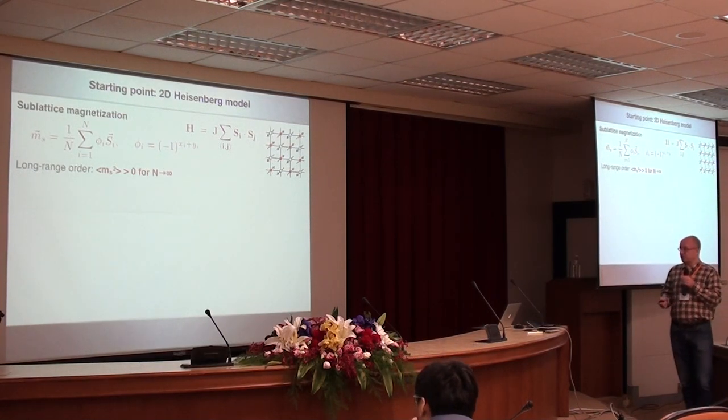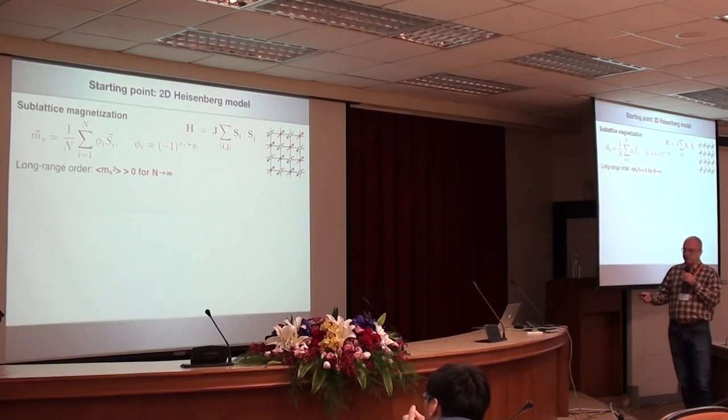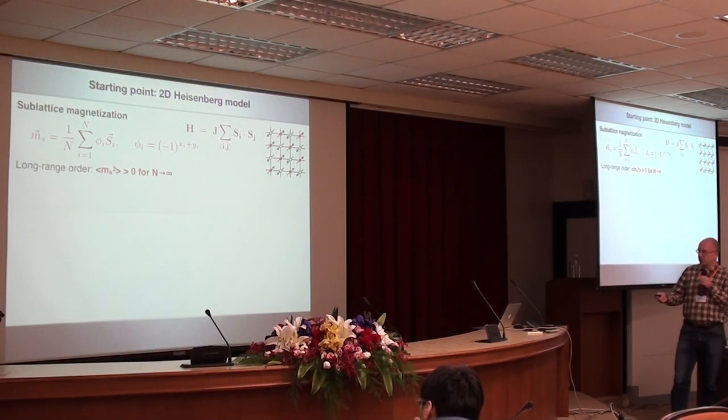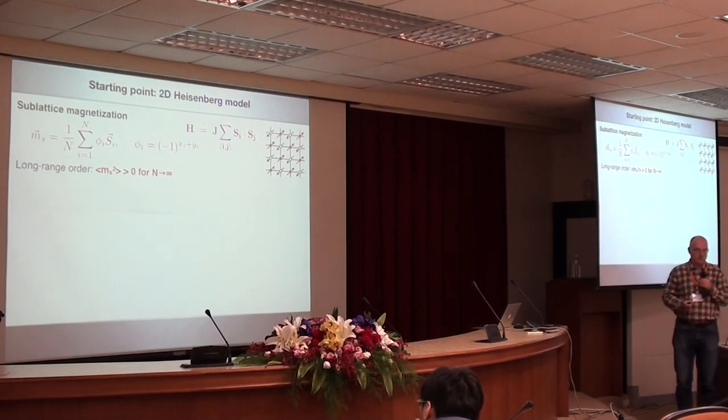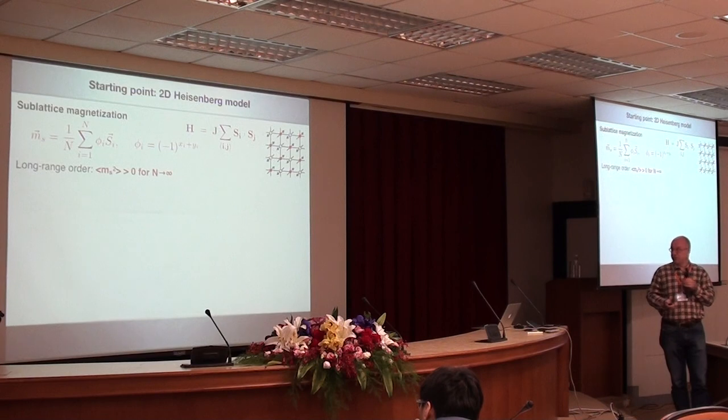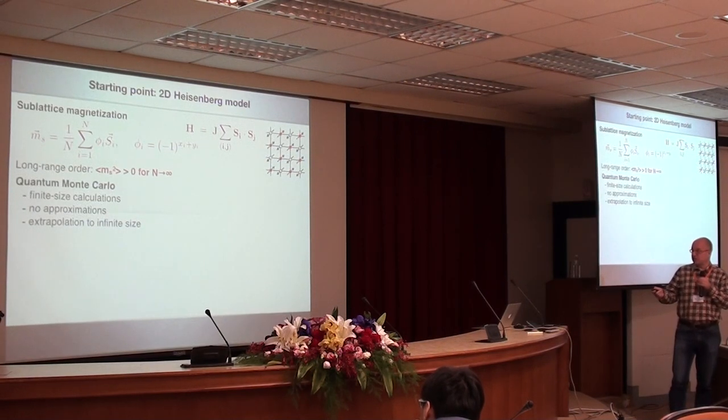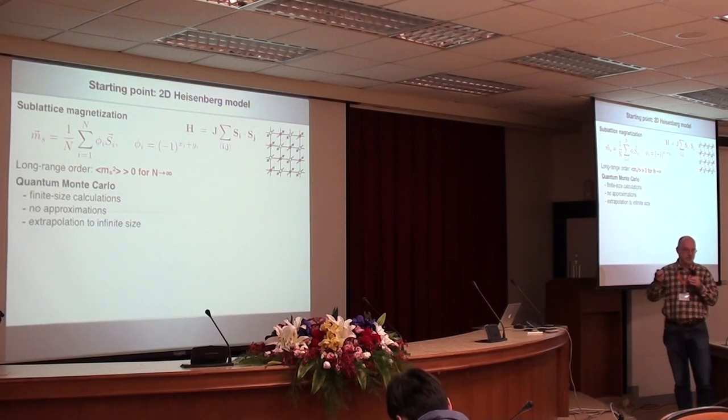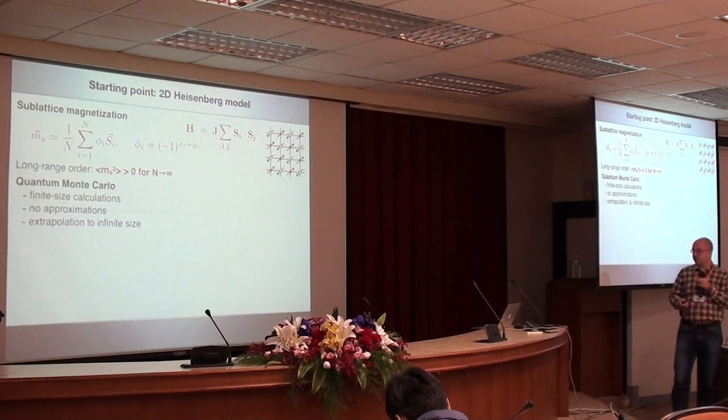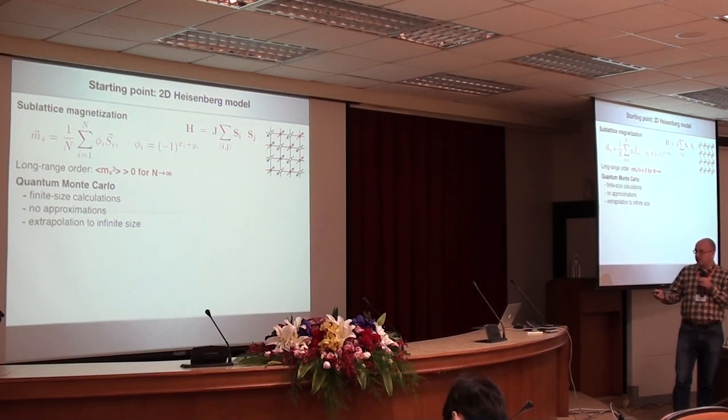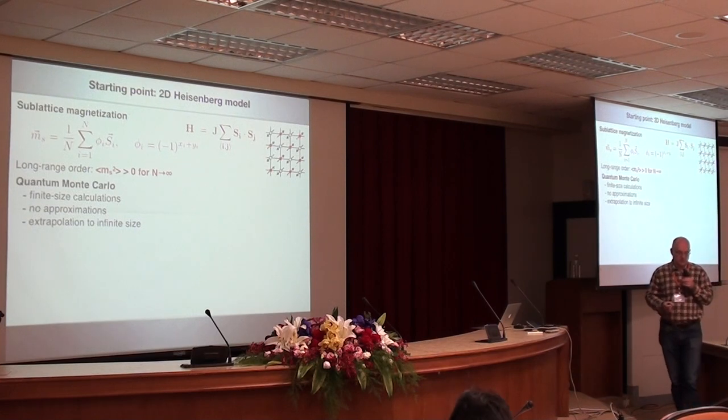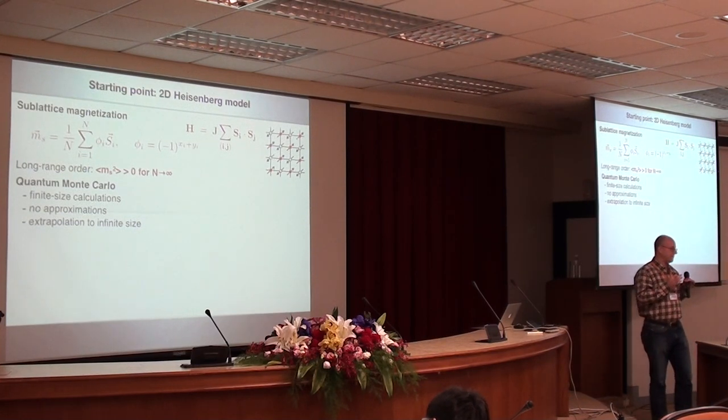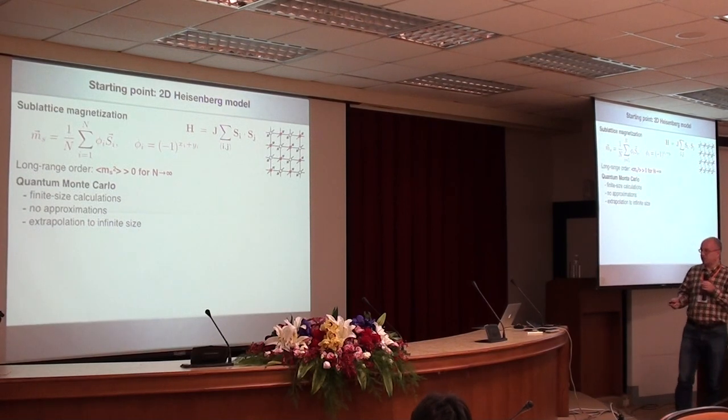We know that it cannot have any long-range order at finite temperature, but it can at zero temperature. From a computational perspective, it's useful to look at, well, we are almost always forced to look at finite system sizes. Then we look at the square of this order parameter, and then we look at the behavior as the system size goes to infinity. If that remains larger than zero, then we have long-range order. We don't break any symmetries in the kind of calculations I'm talking about, so that's why we look at the squared order parameters. We do quantum Monte Carlo simulations, and basically we can do those without any approximations at all. We can get the result without any approximations, and then we can try to do this extrapolation, which is the main challenge then.